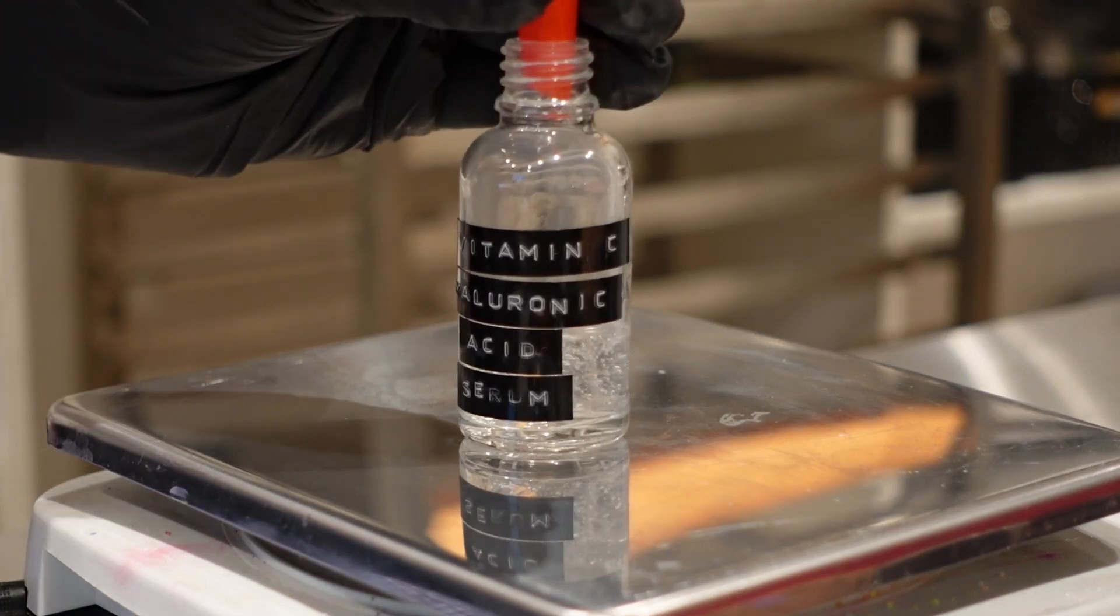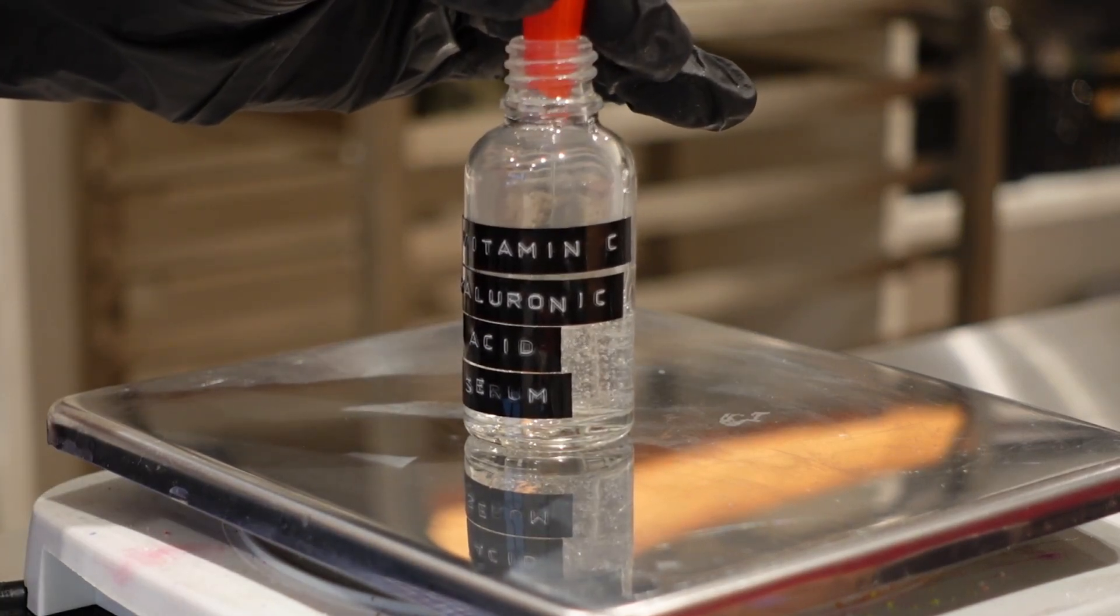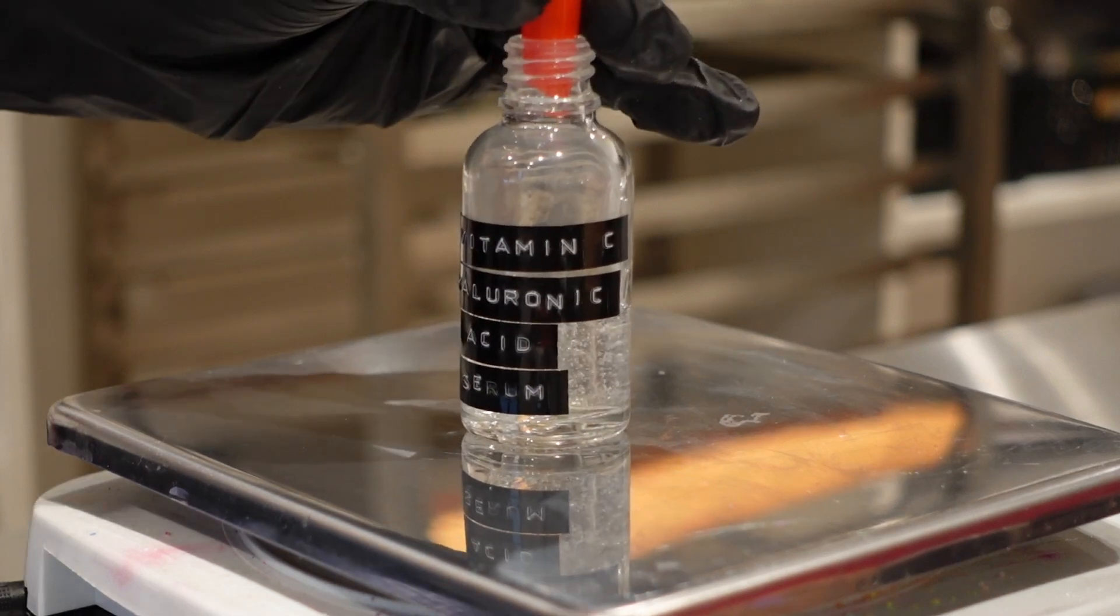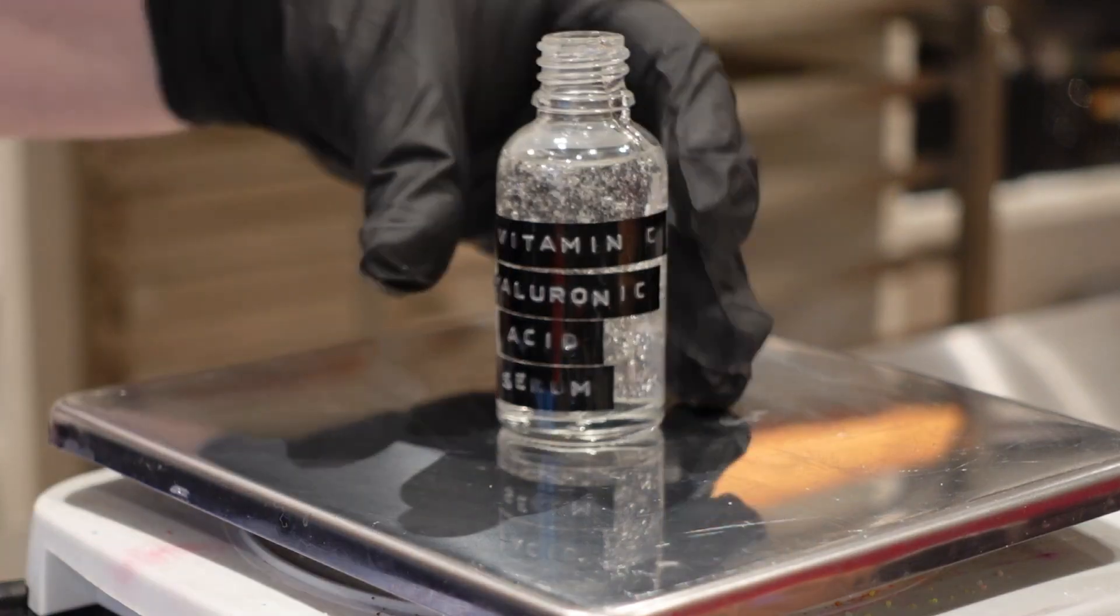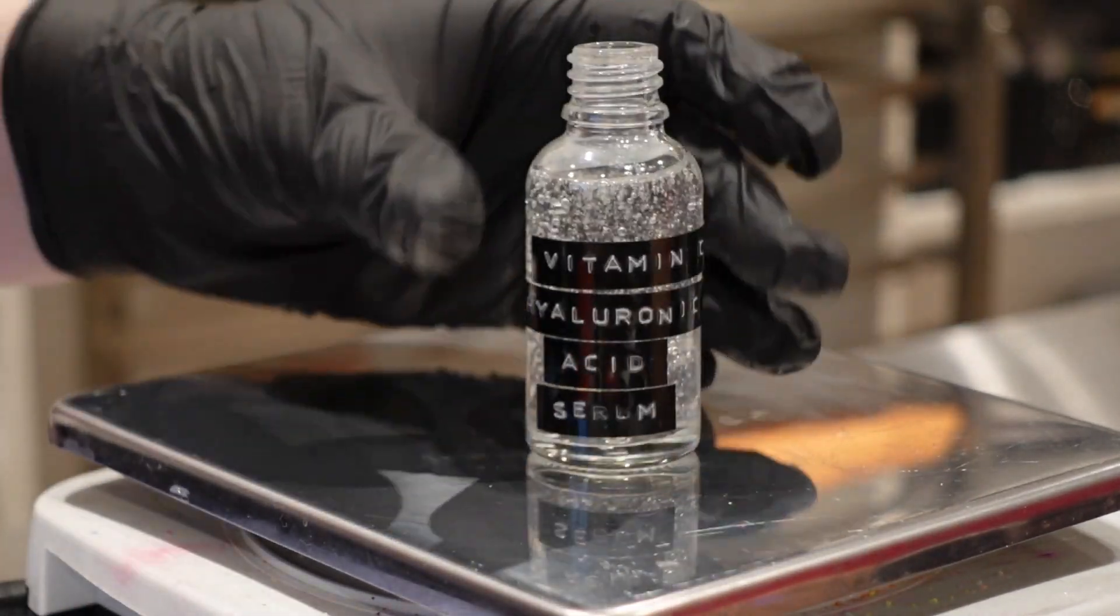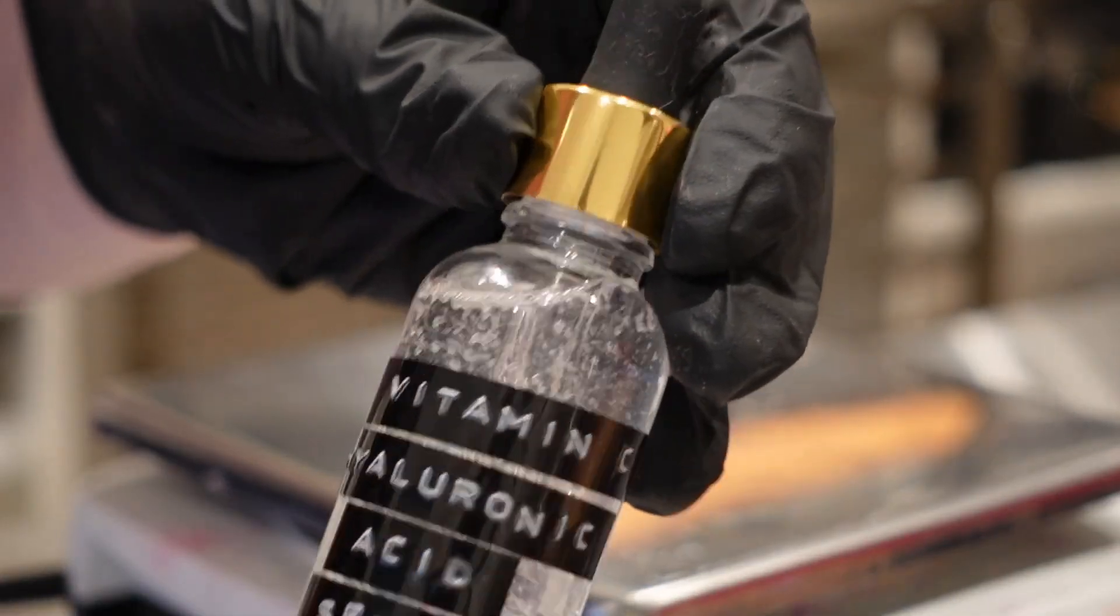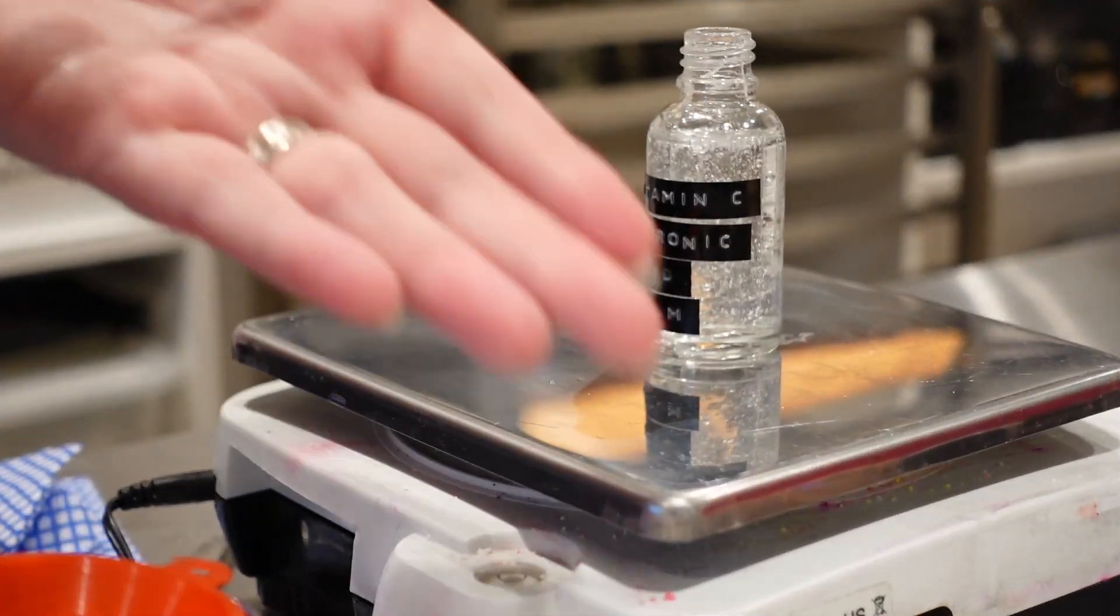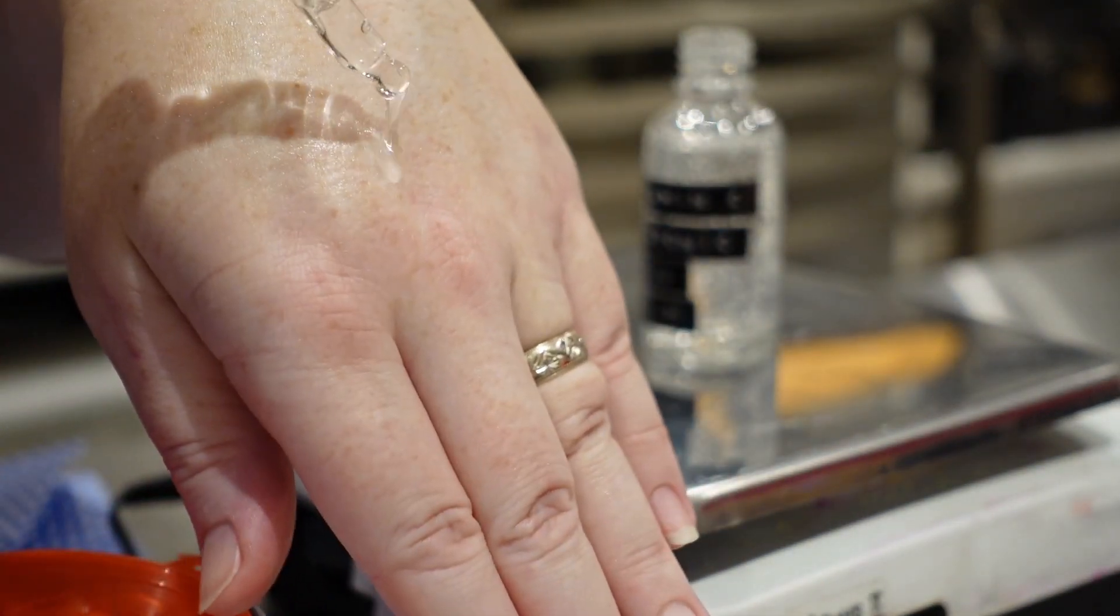You'll notice lots of little bubbles from where I've been stirring it, but don't worry, once you've left that for 24 hours, those disperse and you have a beautiful smooth serum. Let's give it a test on my hand just to see how it comes out and what the viscosity is like. This is a very basic serum and it can be customized with other actives and extracts and things like that that you'd like to use. Just check the pH and compatibility with the other ingredients.